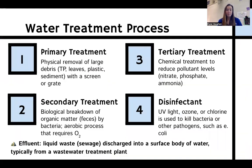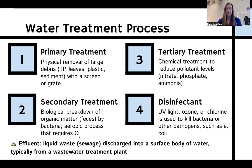We'll begin with primary treatment. Primary treatment is a physical process — it is the removal of large debris such as toilet paper, leaves, plastic, sediment, and paper towels, using a screen or a grate. This is a physical way of separating material, and that material is then taken off and processed separately.